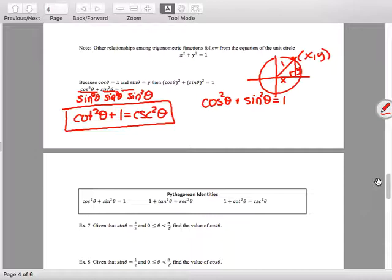All right, so what I'm going to do now is I'm going to take cos²θ + sin²θ = 1, and now I'm going to divide by cos²θ. And so when I do this, cos²θ over cos²θ is one, sin²θ over cos²θ is tan²θ, and what is one over cos²θ then? Sec²θ.